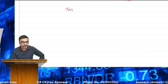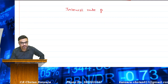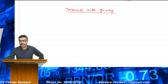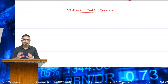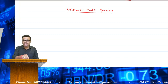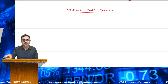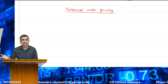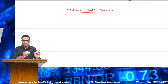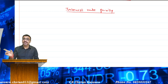Interest Rate Parity. The exchange rate between two countries is affected due to many reasons. For example, if in India $1 is 70 rupees, why is $1 equal to 70 rupees and not 1 rupee? There have to be some reasons for it. Interest Rate Parity is one of the factors which will affect the exchange rate between two countries.